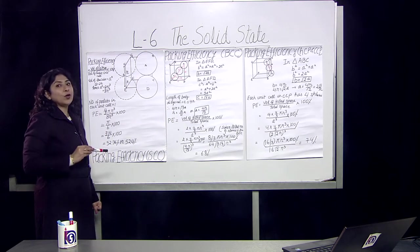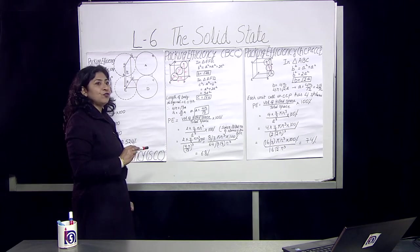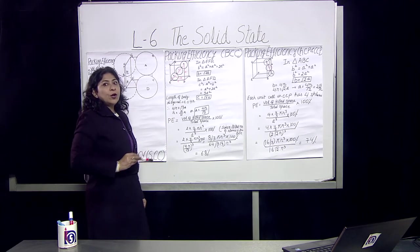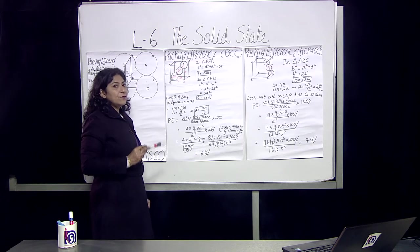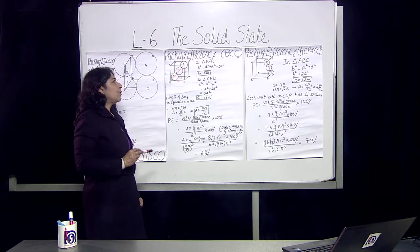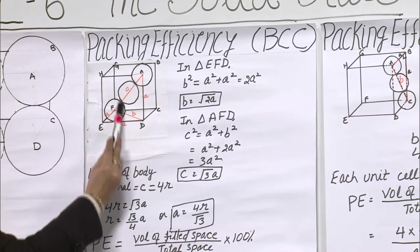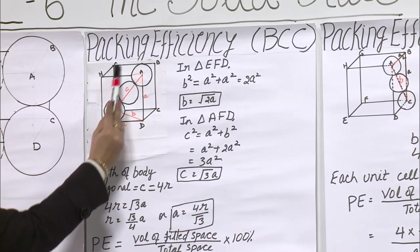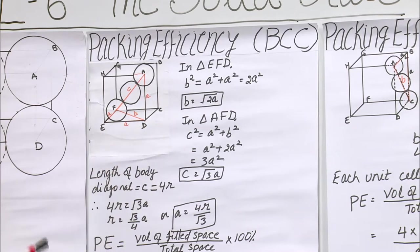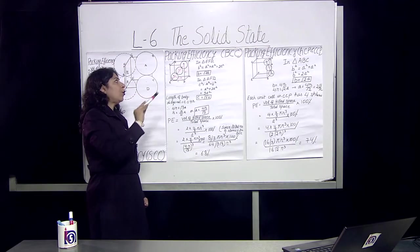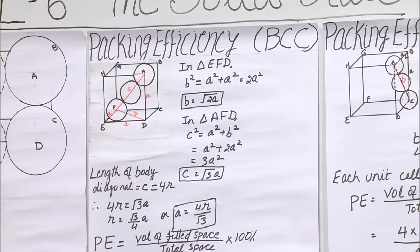The remaining portions are voids. Now let us discuss packing efficiency of the body centered cubic (BCC) cell. In BCC, as we discussed in the previous video, there are atoms at each corner of the cube, and additionally one atom at the body center. So there is one atom at the center and contributions from corner atoms, giving two atoms total.